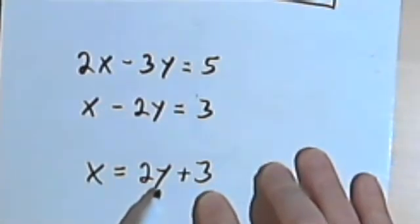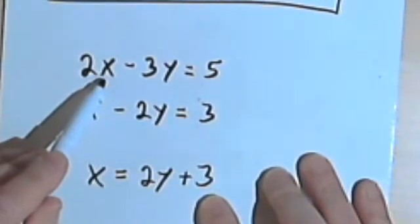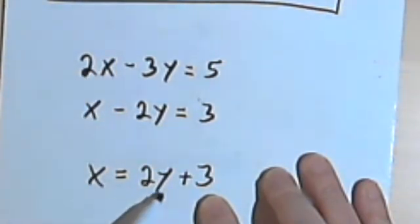And then substitute the 2y plus 3 into the x in the other equation. Substitute it over there, so you're gonna have 2 times 2y plus 3.